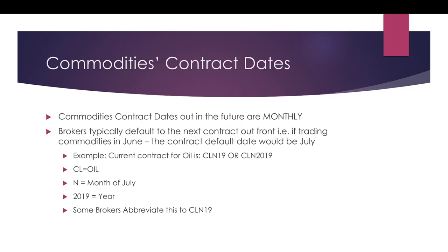Commodities contract dates are monthly, versus sector contract dates, which are quarterly. For commodities, we have a futures contract that expires the third week of every month. It's a certain business day of the third week of the month, and if that day falls on a weekend, you move it to the third business day before. Brokers typically default to the next contract out front — if trading commodities in June, for example, the contract default date would typically be July.